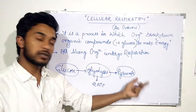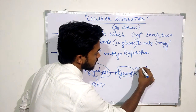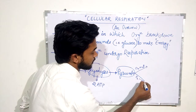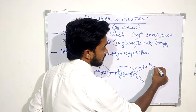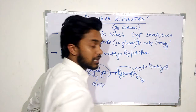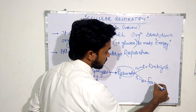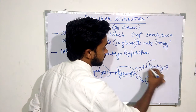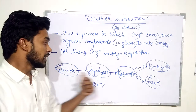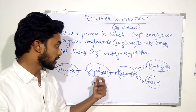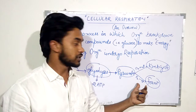Pyruvate is produced by glycolysis. In the presence of oxygen, pyruvate undergoes the Krebs cycle. In the absence of oxygen, it undergoes fermentation. So pyruvate's pathway depends on whether oxygen is available or not.